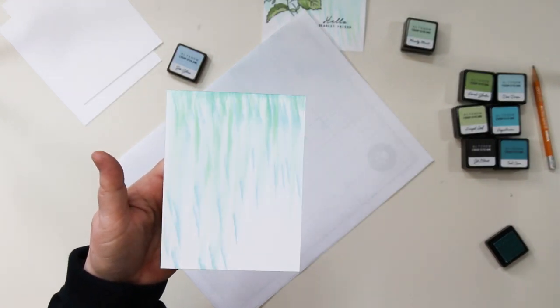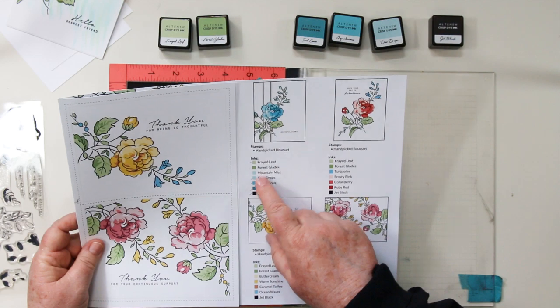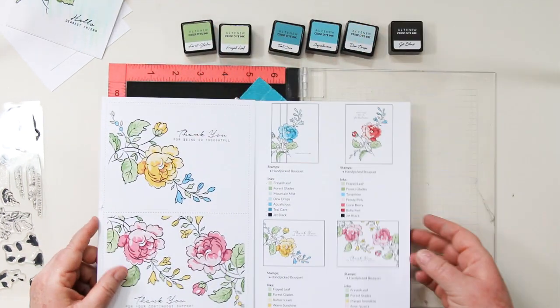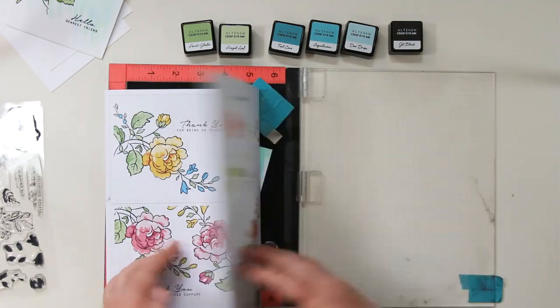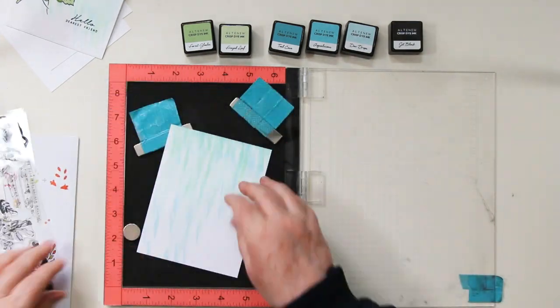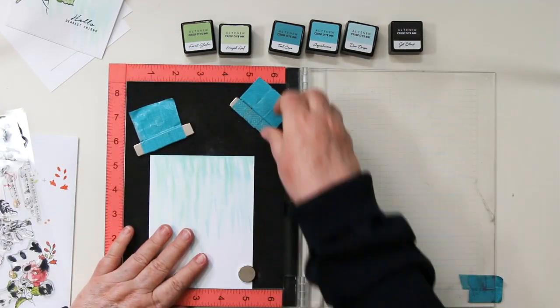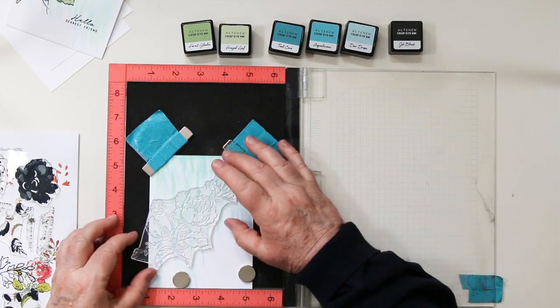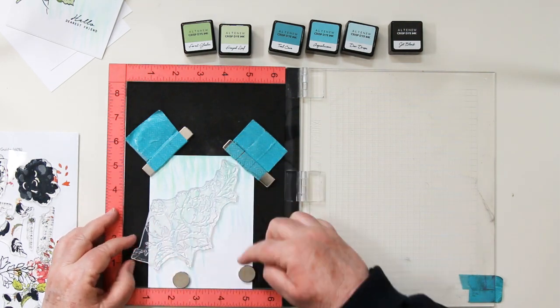The five page booklet that comes with the stamp set gives you ideas and color choices. Instead of reinventing the wheel, I'm going to use the first set that they have suggested, which is frayed leaf, fourth glades, mountain mist (I don't have so I'm just going to skip it), dewdrops, aqualicious, teal cave, and jet black.